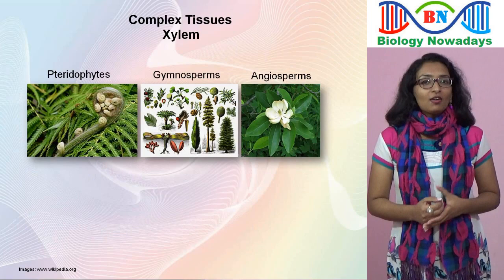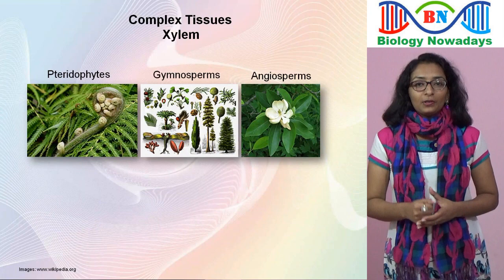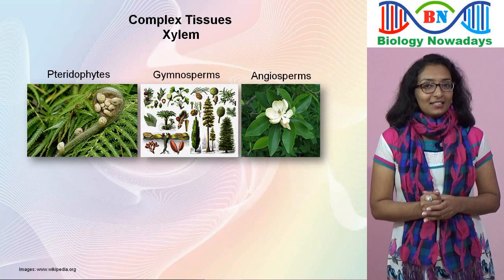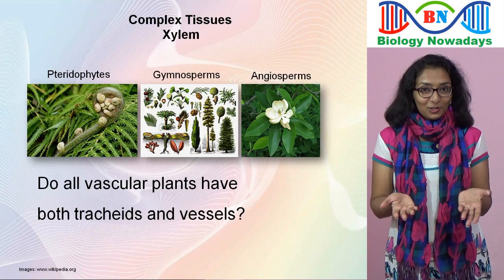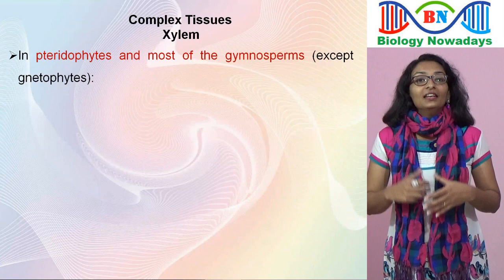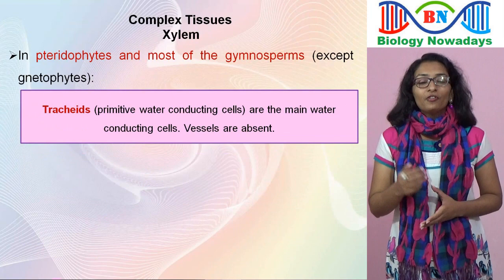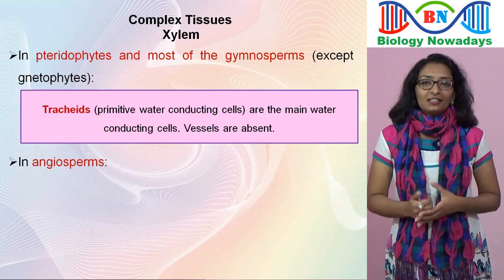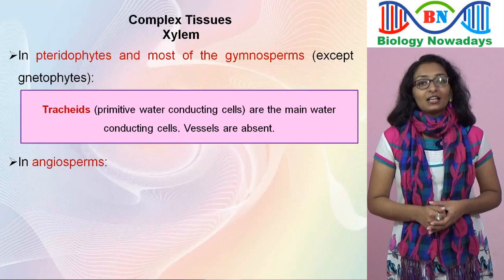All vascular plants — pteridophytes, gymnosperms and angiosperms — have xylem and phloem. But do all vascular plants have both tracheids and vessels in their xylem tissue? The answer is no. In pteridophytes and most gymnosperms, xylem vessels are absent; in these primitive plant groups, tracheids form the main water conducting system. In angiosperms, both tracheids and vessels are found, but here the advanced water conducting cells, that is vessels, form the main water conducting system.